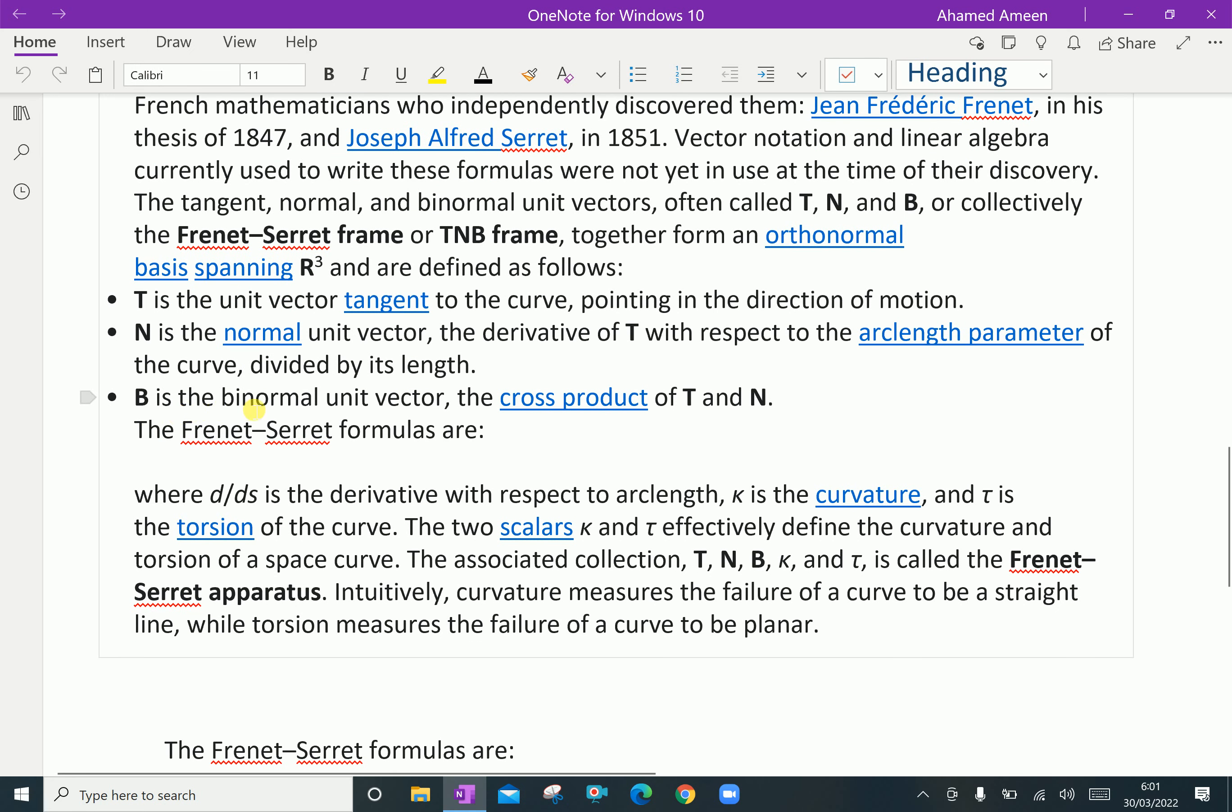B is the binormal unit vector, the cross product of T and N. That is, B equals T cross N.